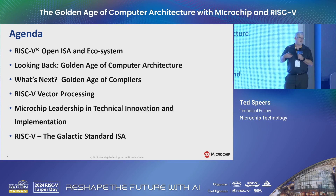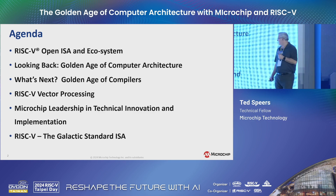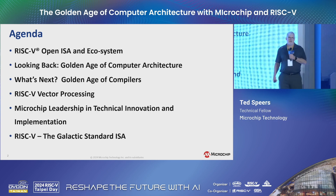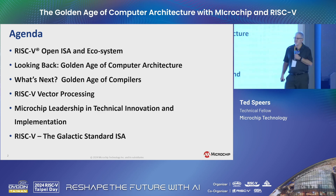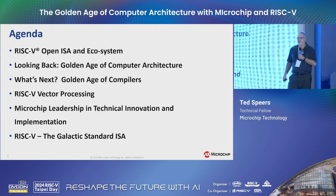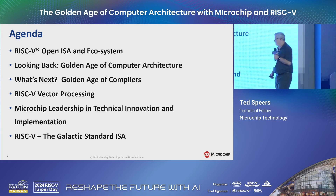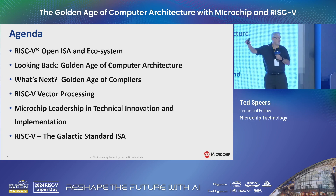I'll talk briefly on RISC-V vector processing — I've made a big bet on RISC-V vectors, and we heard a lot about it today. I think it's very promising. Then a little bit about Microchip's leadership in technical innovation — we really are putting a lot of skin in the game here in RISC-V. And finally, RISC-V is going to be the galactic standard ISA — we're not just talking about Earth here.